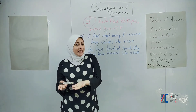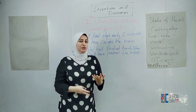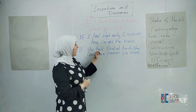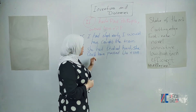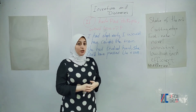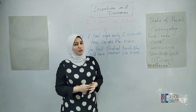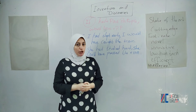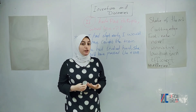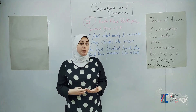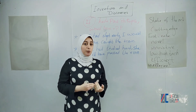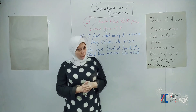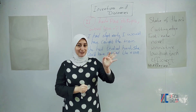Here, if I had slept early, I would have caught the train — it means I didn't sleep early and I missed the train, but I wish I hadn't. Another example: if she had studied hard, she could have passed the exam — maybe she didn't get enough marks or she failed. So I use the third conditional to speak about something that didn't happen in the past and I wish it had happened the way I wanted. I hope that was useful enough for you, and see you in another video.